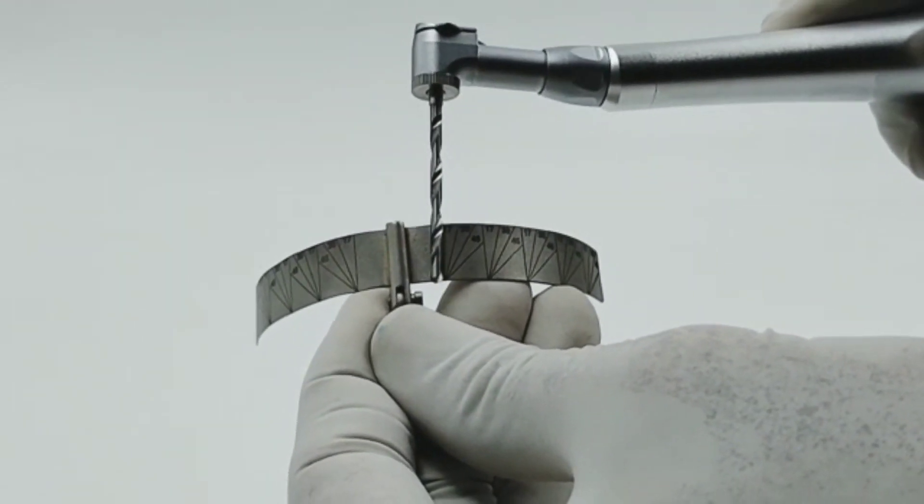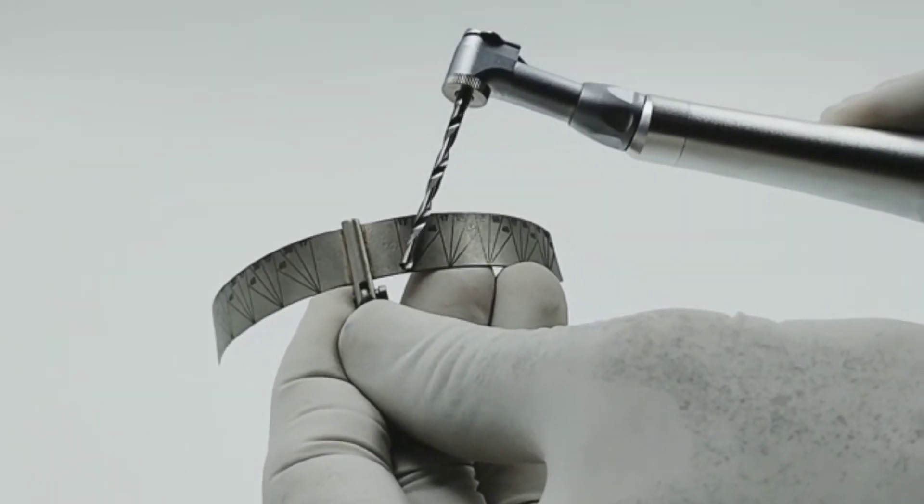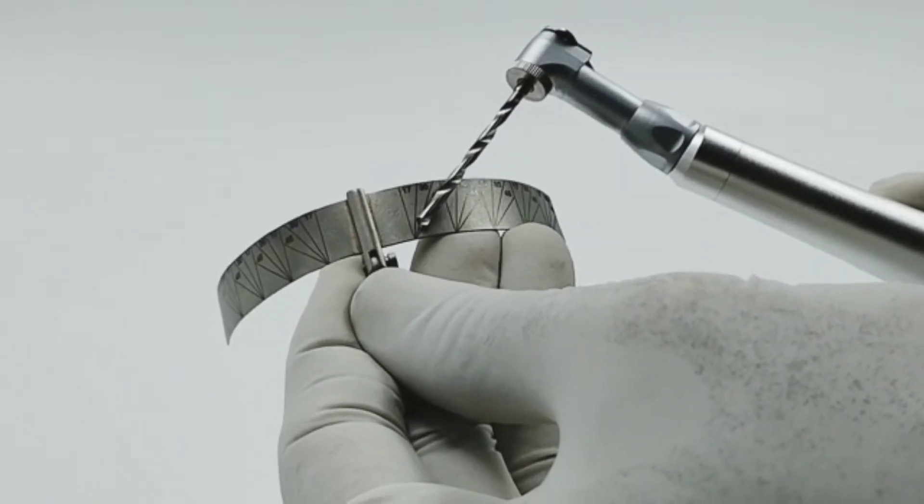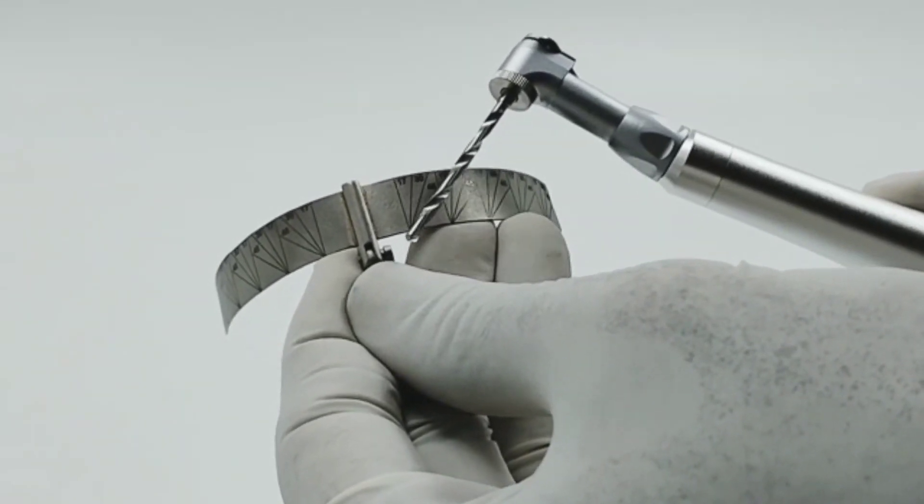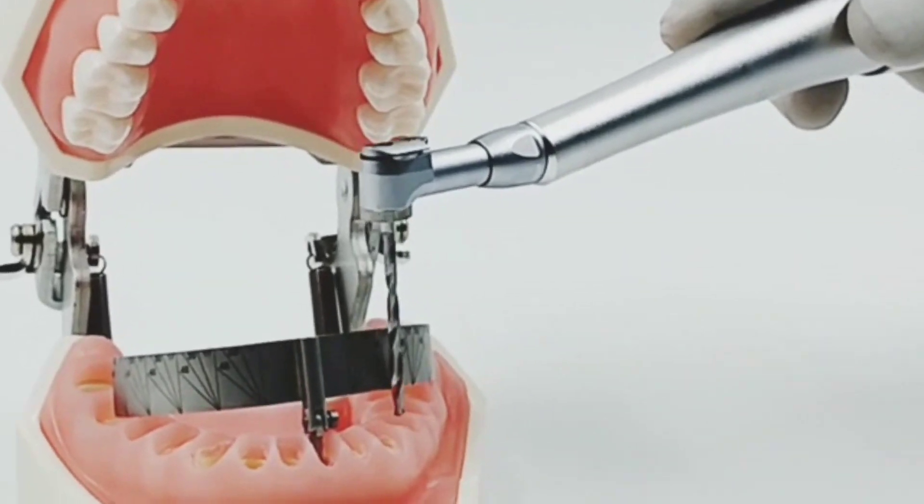The guide also assists in retracting the tongue in mandibular cases. The vertical lines on the guide are used as a reference for placing parallel anterior implants and for drilling at the correct angulation to place posterior implants.